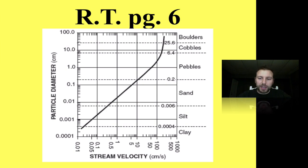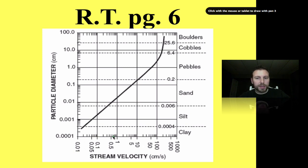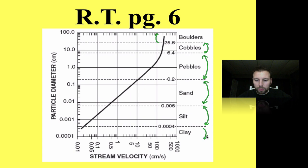This brings us back to page six in our earth science reference table. On the y-axis we have particle diameter on a logarithmic scale, and along the bottom we have stream velocity, also logarithmic. Along the right-hand side the dotted lines represent the size range of each particle type: boulders are 25.6 centimeters and bigger; cobble from that line to the next; pebbles from 0.2 to 6.4 centimeters; sand 0.2 to 0.006; silt 0.006 to 0.004 centimeters; and clay anything smaller than 0.004 centimeters.